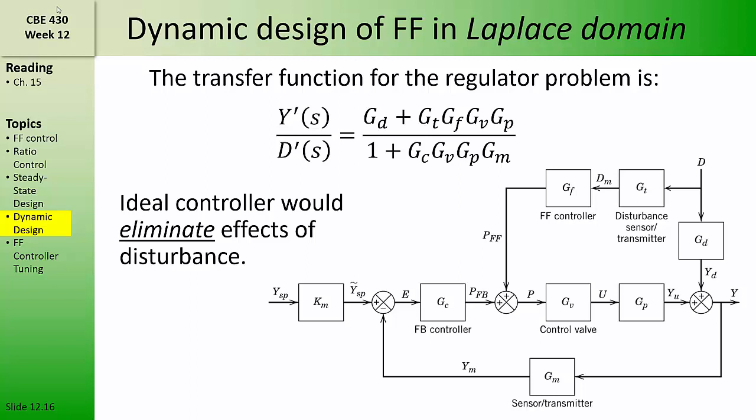Now that we've added this feed-forward controller to our feedback loop, we should consider what the regulator transfer function looks like. The regulator transfer function has the same denominator that it would have for the standard feedback control loop, one plus the open-loop transfer function. But now, this disturbance has two forward paths between D and Y. One forward path goes through GD, the way it does for a standard feedback loop, and the other forward path goes through these other four transfer functions: GT, GF, GV, and GP. The sum of those two contributions is the numerator of the regulator transfer function.